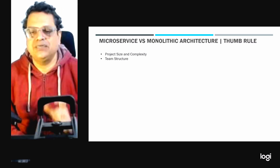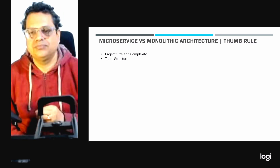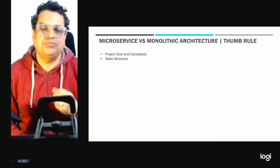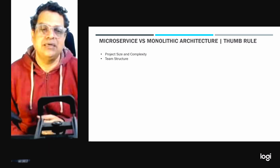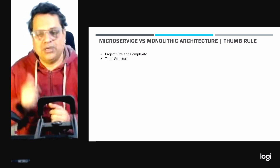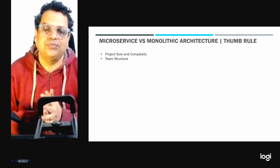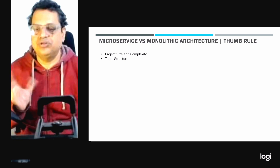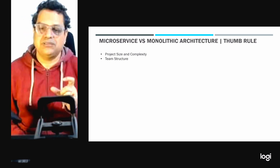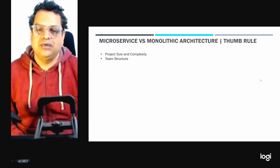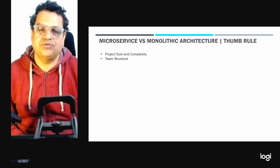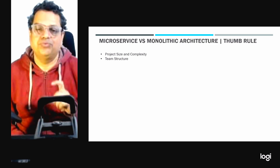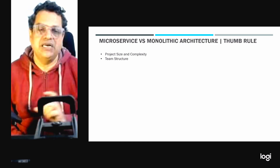The next factor is scalability needs. Choose microservices if individual components of the application are expected to scale differently. Opt for monolithic architecture when uniform scaling of the entire application is acceptable. The next factor is technology flexibility — microservices are ideal when different services require different technologies or frameworks, whereas monolithic architecture is appropriate when a single technology stack is sufficient for the complete requirement.